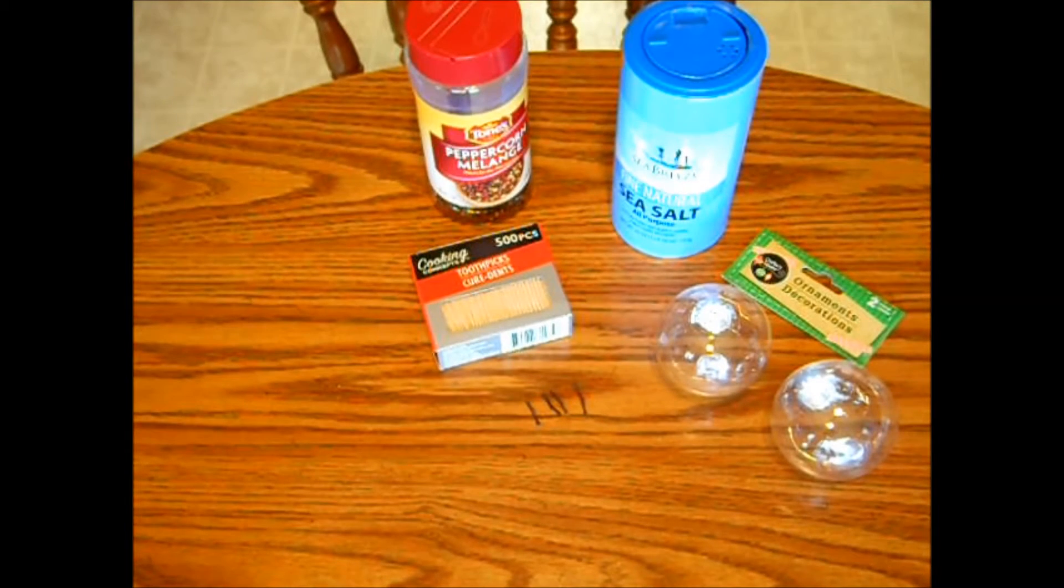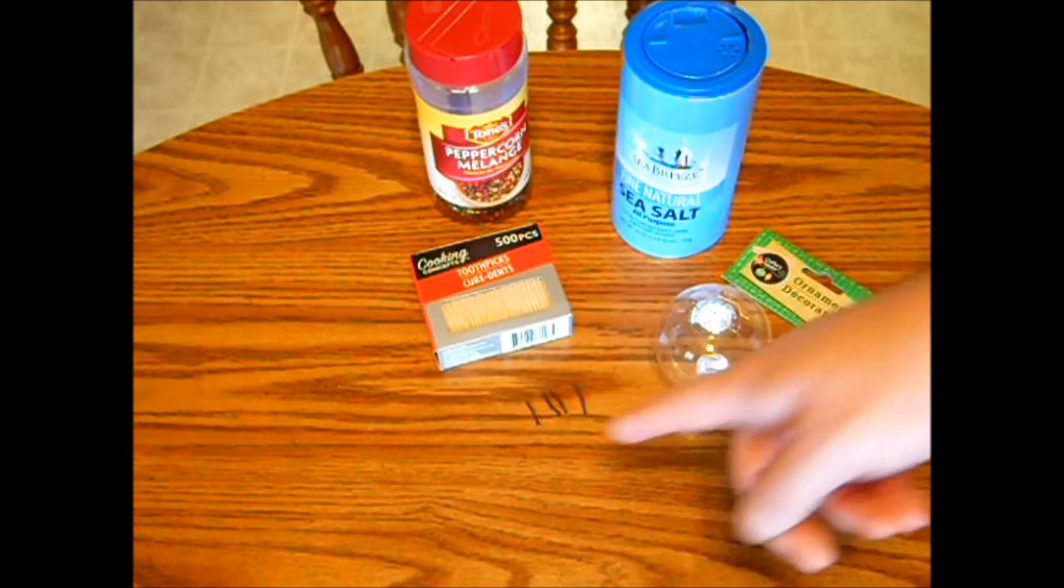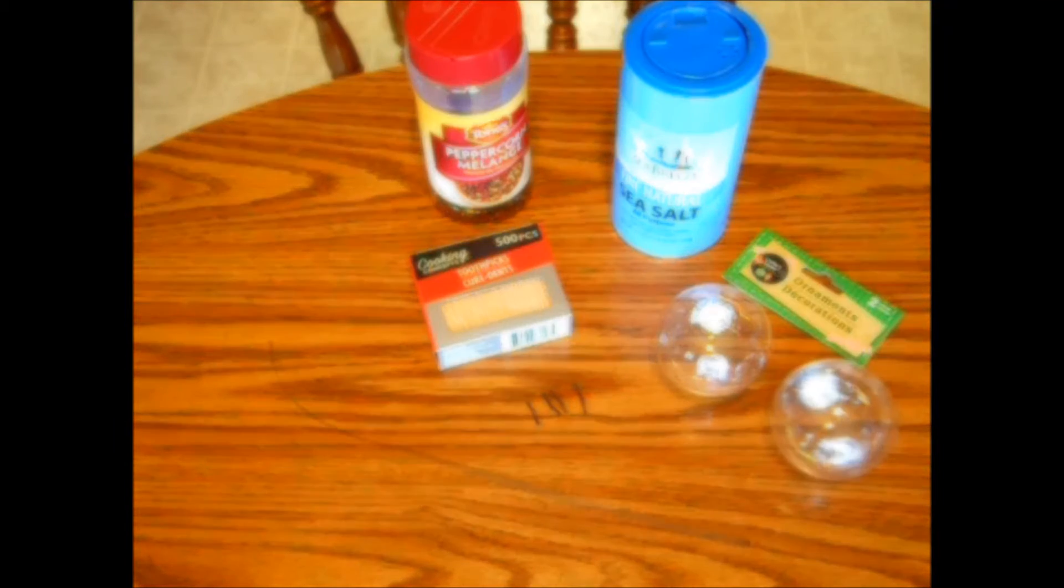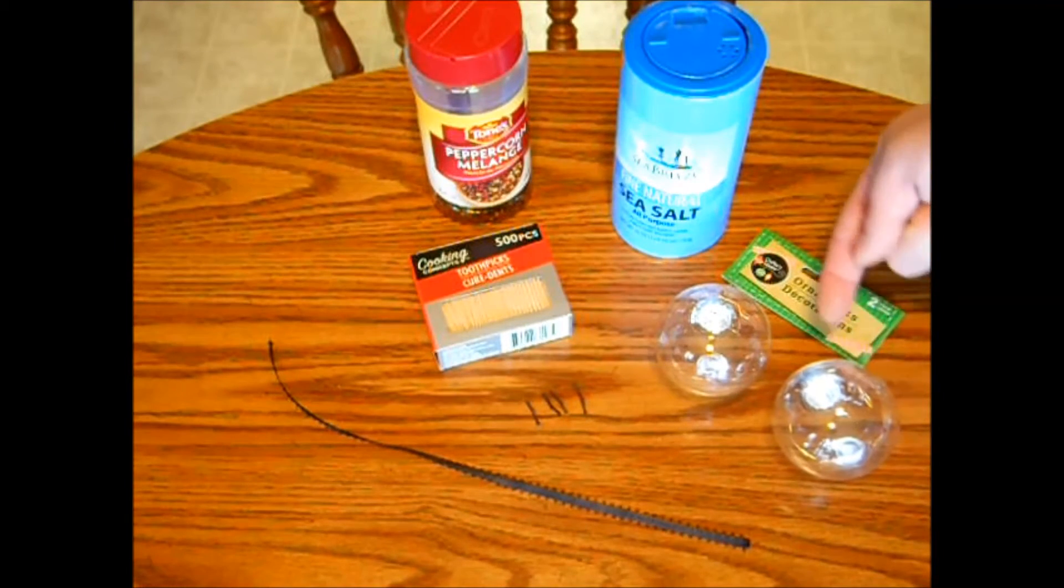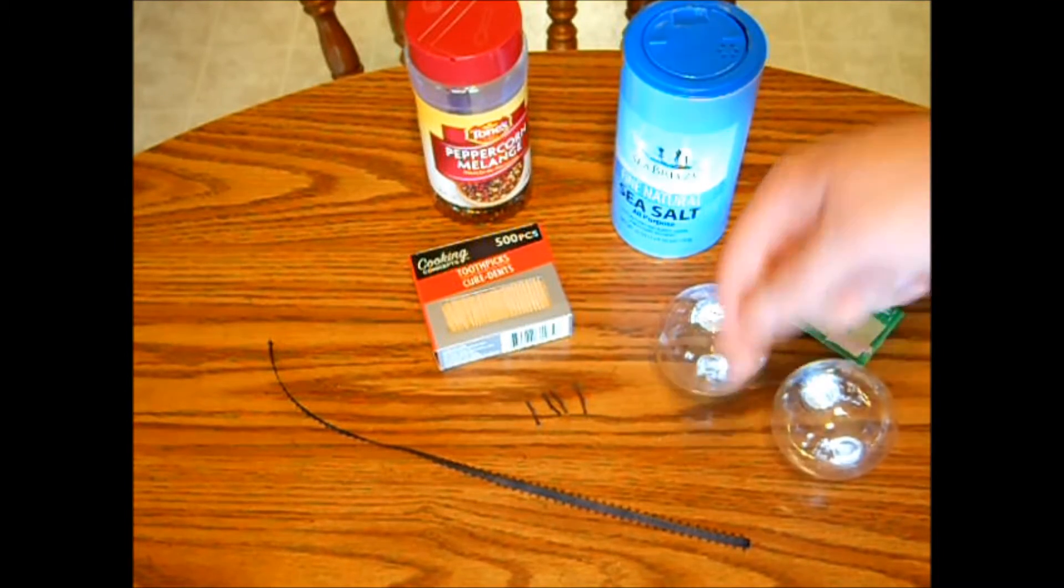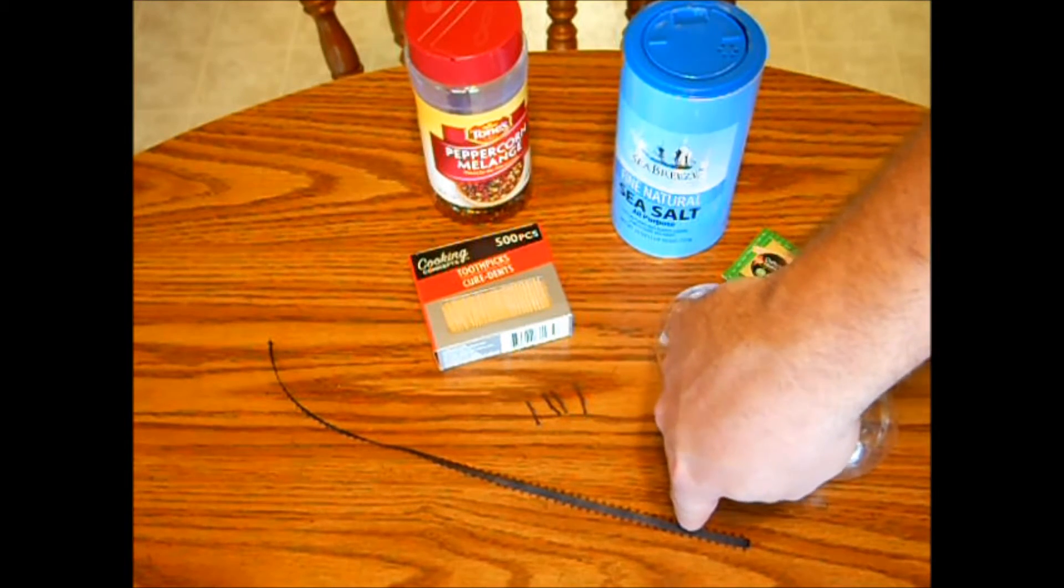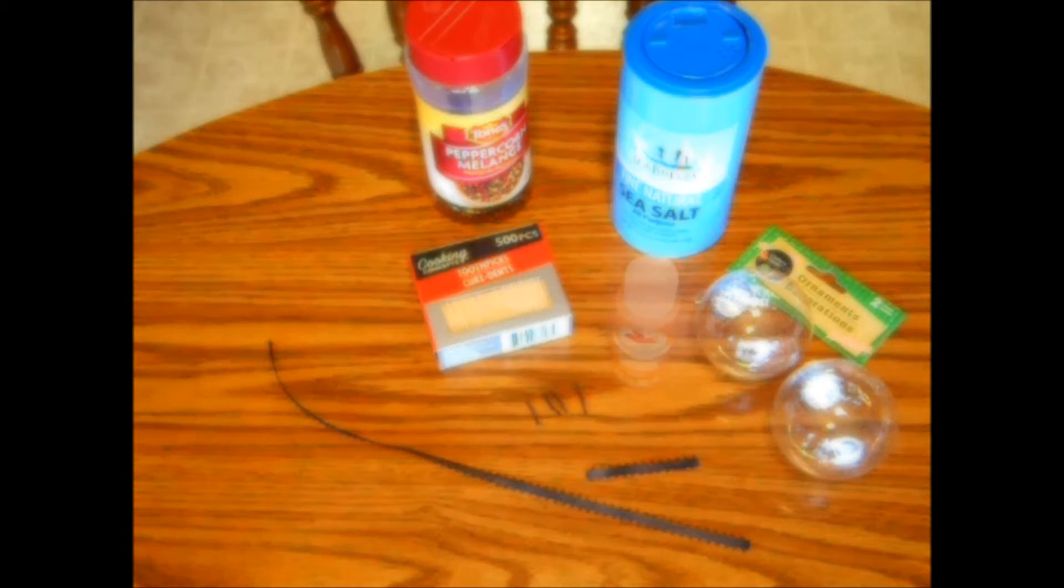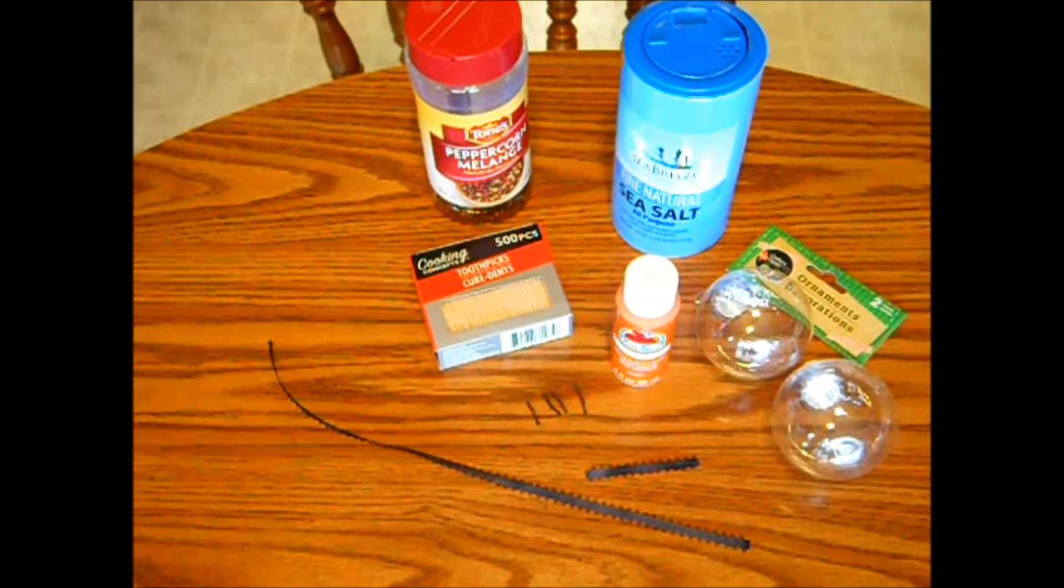You're also going to need some twigs for the arms of our snowman. I just went out to our tree and I cut about an inch long pieces of little twigs off of it. Now these bulbs do come with hangers, but I don't like them. So you're also going to need a twelve inch piece of ribbon and also a two and a half inch piece of ribbon to use for the snowman scarf. And finally, you're going to need some orange paint. Let's get started!